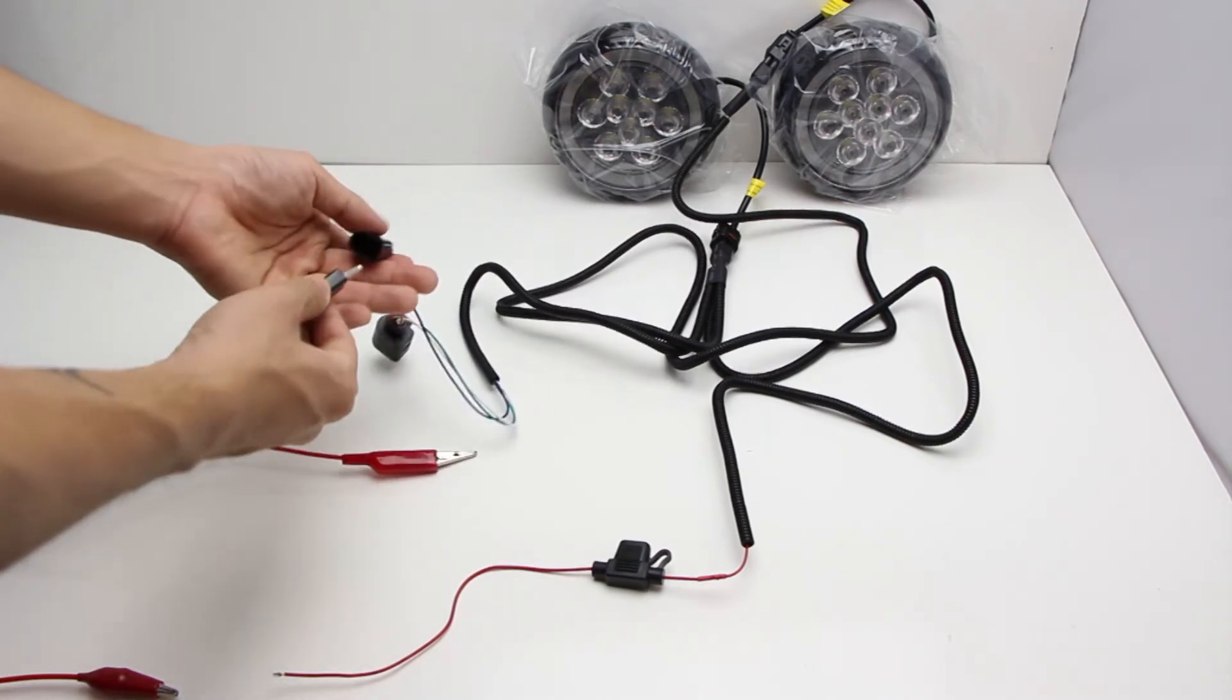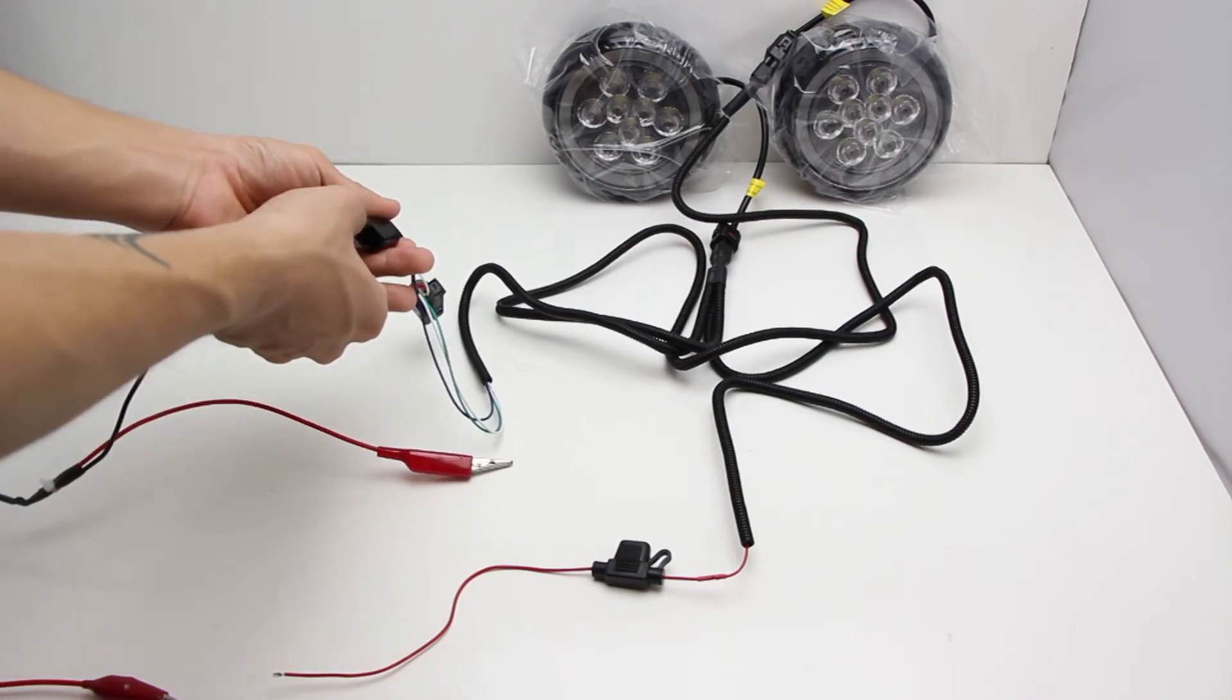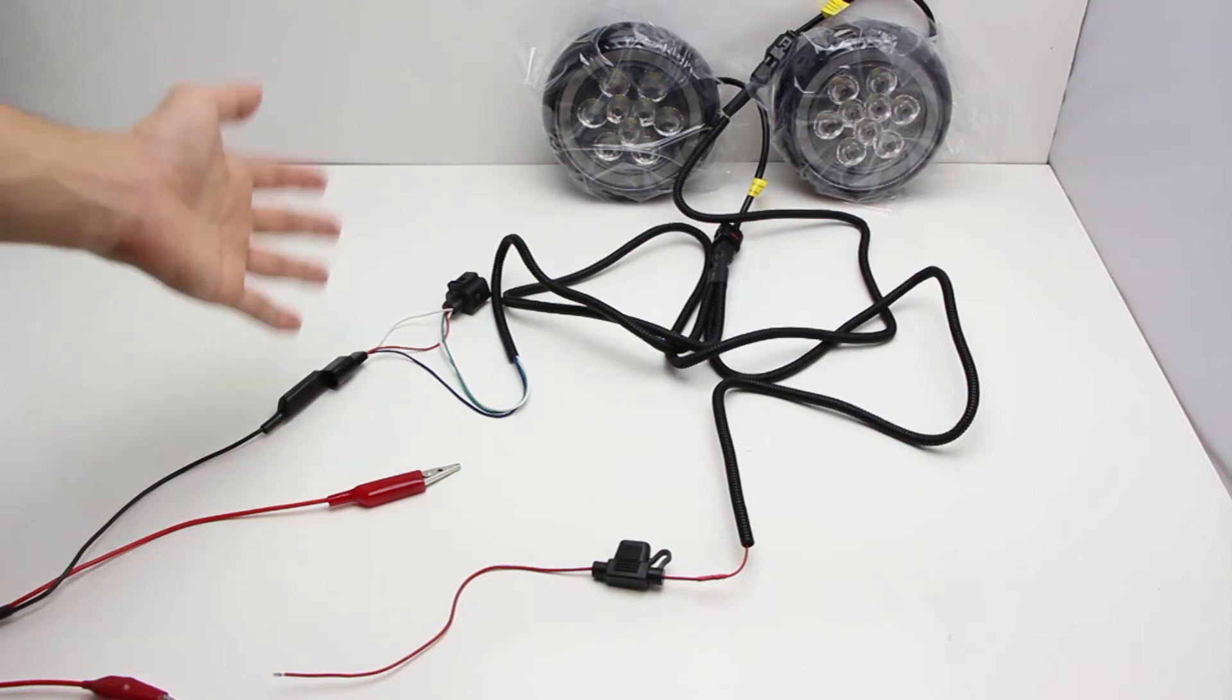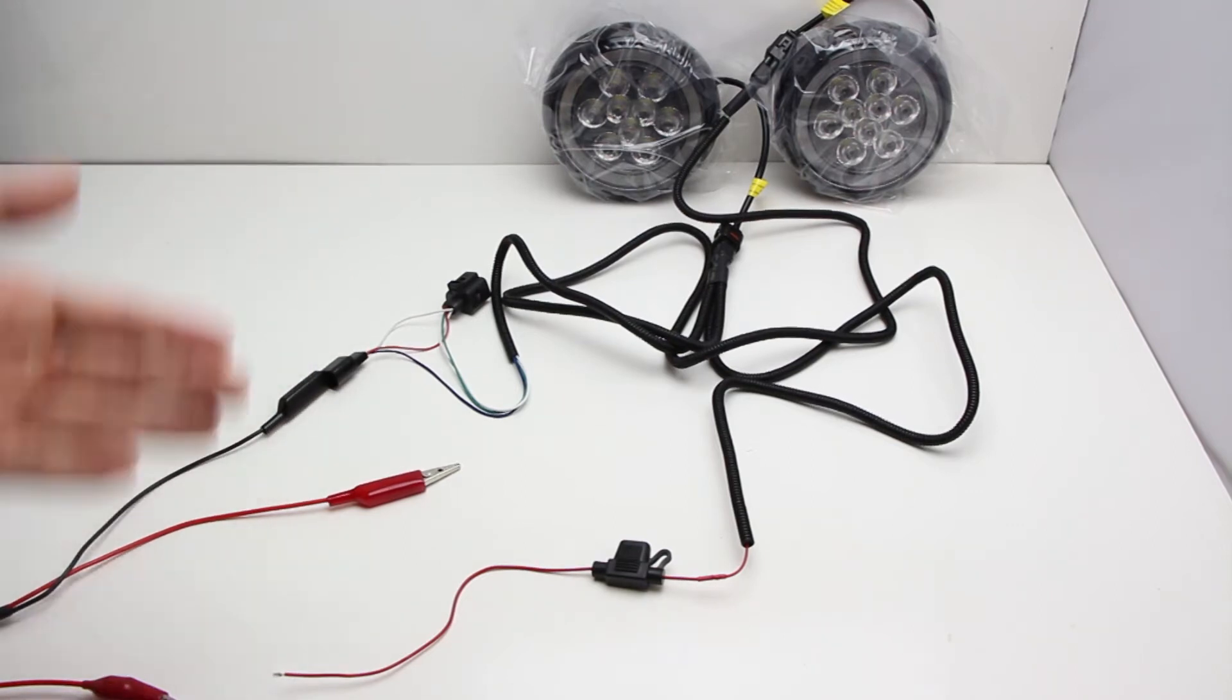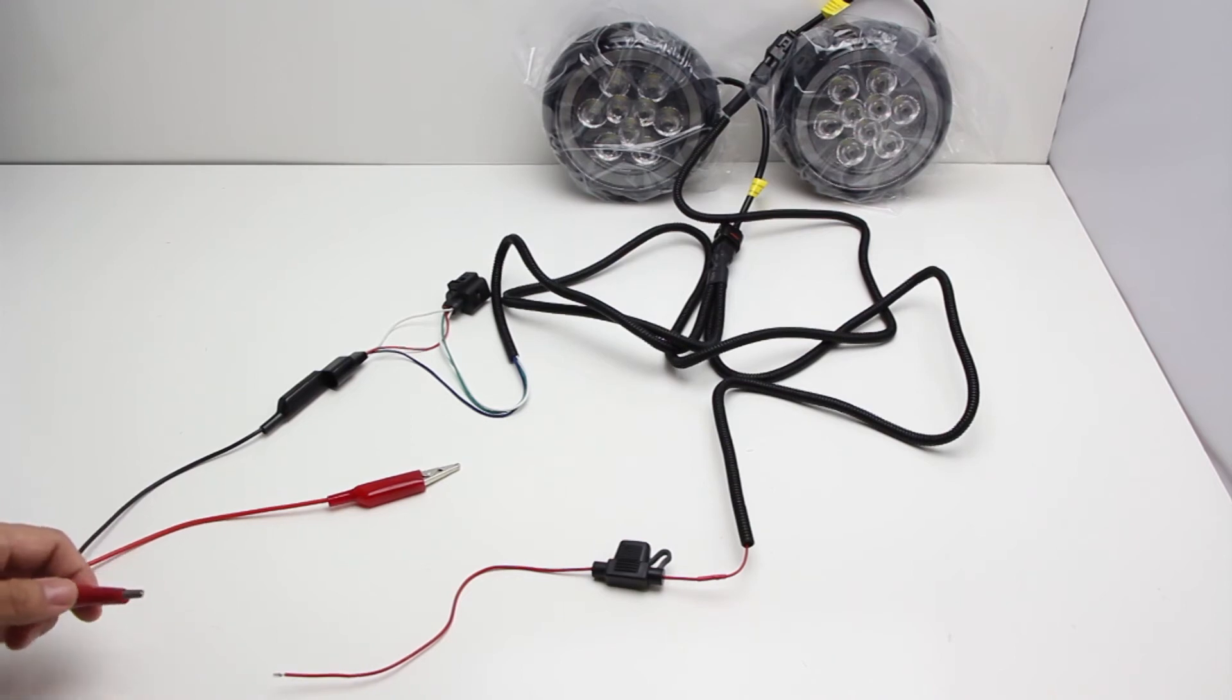The negative connection will power the daytime running light ring. As you can see the daytime running lights will not light up unless you connect the single red wire to your ACCE. You must connect it to your ACCE.